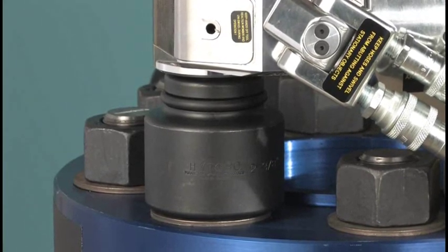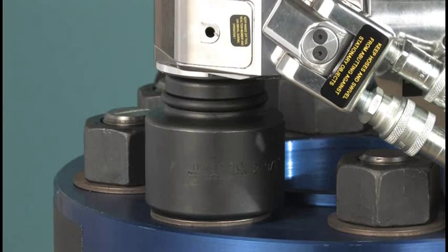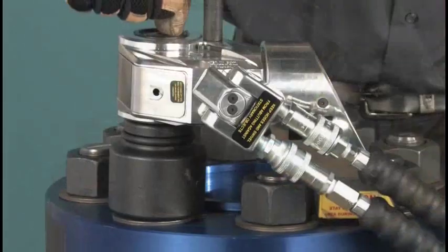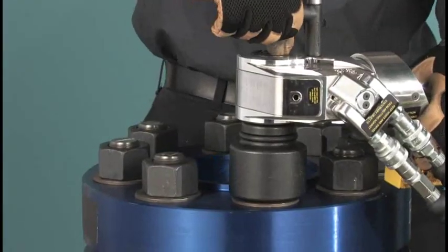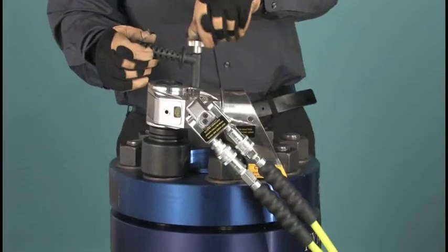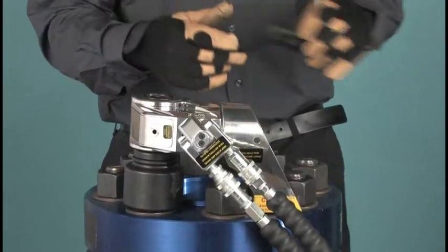Often, bolts are required to be tightened in increments, rather than all at once. This is done by simply choosing a lower pressure, corresponding to the percentage of final torque desired on each pass. Reset the pressure in stages until the final value is reached.